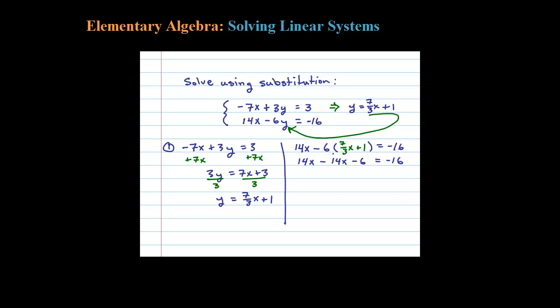Did you catch that? 6 times 7 thirds is 14 because 3 goes into 6 twice, 2 times 7 is 14.